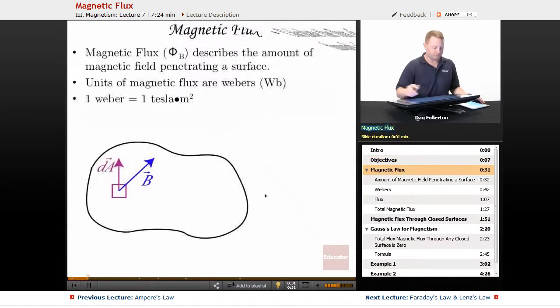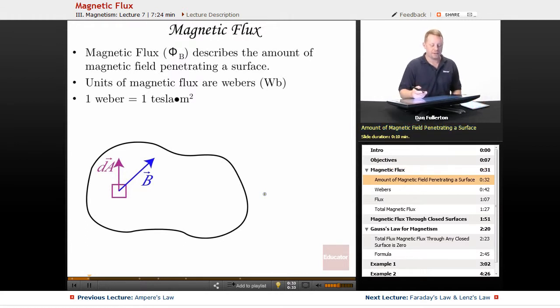Alright, so magnetic flux phi sub B, sometimes written phi sub M, describes the amount of magnetic field penetrating a surface, just like it did for electric flux.